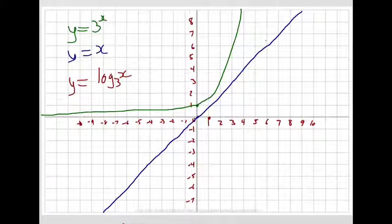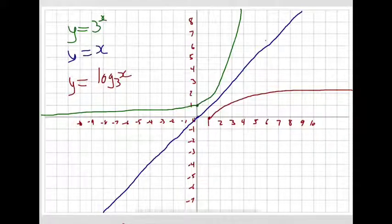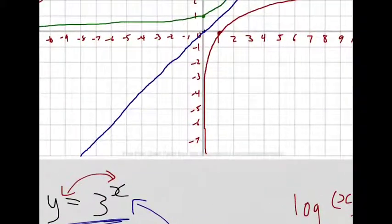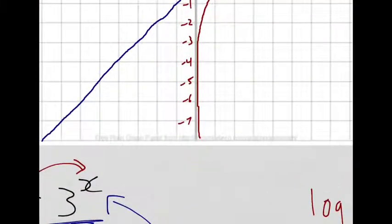There's something interesting about this. The graph curves, reflected on that y equals x line. It's got an asymptote on the y-axis. Which makes sense — it used to have an asymptote on the x-axis; now it has one on the y-axis. The curve is only getting closer and closer to that y-axis, never touching it.